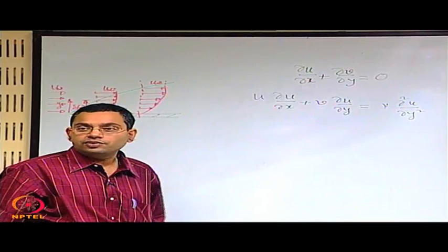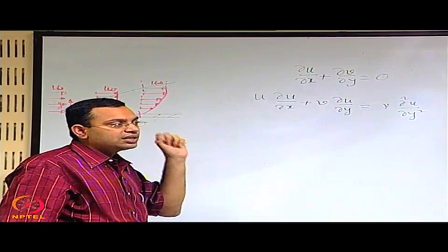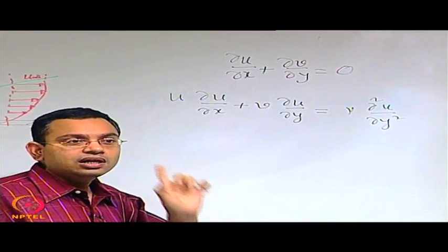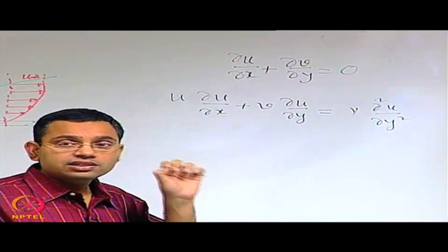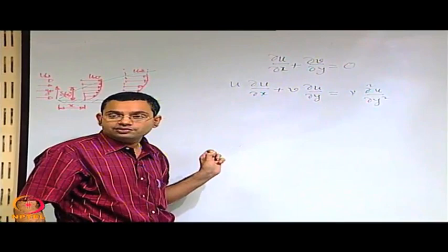We will investigate whether it is possible to convert the solution as a function of a single variable — not two variables x and y, but a single variable where that single variable contains the information of both x and y. If we are successful in doing that, because of having a function of a single variable, the partial differential equation will be converted into an ordinary differential equation.